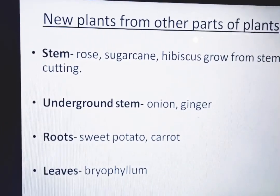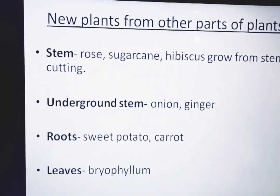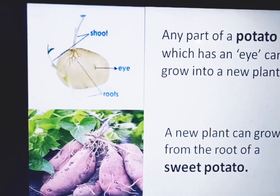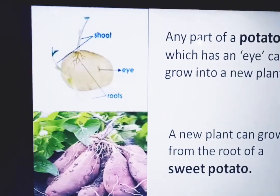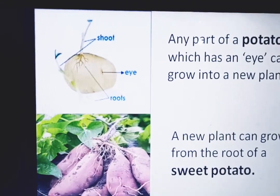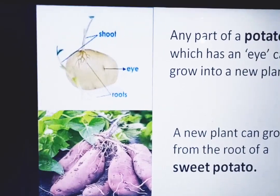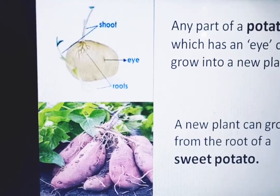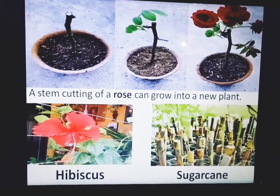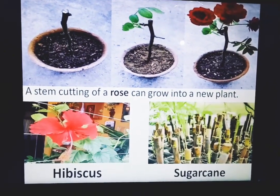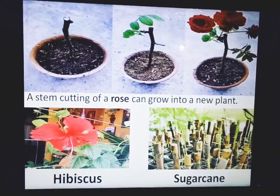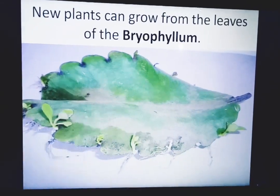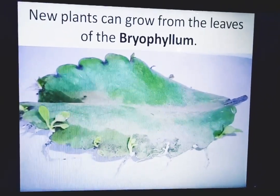New plants from other parts of plants: those parts are stem, underground stems, roots, and leaves. Potato is an underground stem — any part of a potato which has an eye can grow into a new plant. A new plant can also grow from the root of a sweet potato. Rose, hibiscus, and sugarcane are examples of stem propagation — a stem cutting of a rose can grow into a new plant. New plants can also grow from the leaves of the bryophyllum.